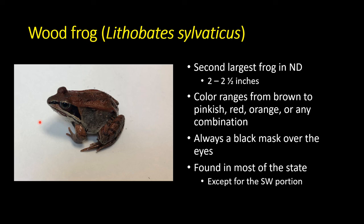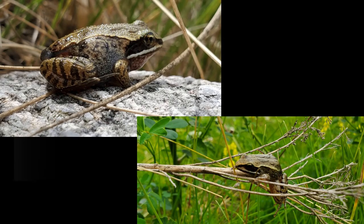The definitive characteristic of the wood frog is the black mask over its eyes and a bright white upper lip. Regardless of background color or spotting, you'll see that black mask across each eye — like a burglar — and a really bright white upper lip. Those two characteristics are easily recognizable regardless of color variation. Wood frogs are found throughout most of the state except the southwest, as they need wooded habitat — we see them in the Red River Valley and through the north-central and northwest portions.